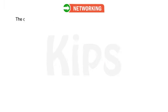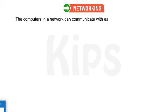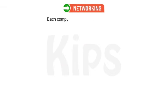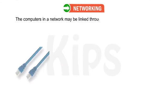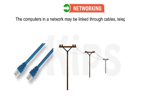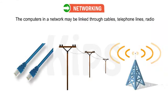The computers in a network can communicate with each other as well as work independently. Each computer in a network is called a node. The computers in a network may be linked through cables, telephone lines, radio waves, or infrared light beams.